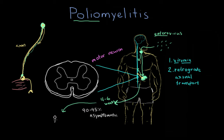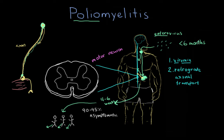Even though many people recover and don't experience symptoms, at some point it can reach somebody who will. Kids under about six months old are most at risk. In areas of improper sanitation, this virus can spread throughout the community. Now, taking a step back to the pathophysiology — I have a cross-section of the spinal cord drawn out. The motor neurons are the cells targeted by polio, located in the anterior horn of the spinal cord.